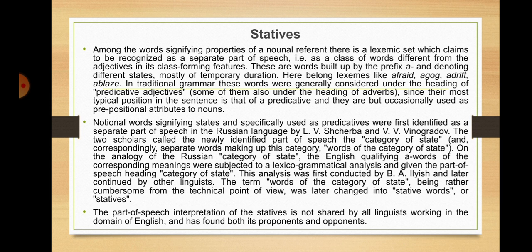In traditional grammar, these words were generally considered under the heading of predicative adjectives, and some also under the heading of adverbs, since their most typical position in the sentence is that of a predicative, and they are only occasionally used as prepositional attributes to nouns. Notional words signifying states and specifically used as predicatives were first identified as a separate part of speech in Russian by Sherba and Vinogradov. The two scholars called the newly identified part of speech the 'category of state', and correspondingly, the individual words making it up 'words of the category of state'. On the analogy of the Russian category of state, the English qualifying A-words of corresponding meanings were subjected to a lexico-grammatical analysis and given the part-of-speech heading 'category of state'. This analysis was first conducted by Elish and later continued by other linguists. The term 'words of the category of state', being rather cumbersome, was later changed into 'stative words' or 'statives'.